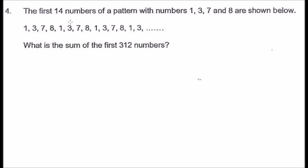Question 4. The first 14 numbers of a pattern with numbers 1, 3, 7, and 8 are shown below: 1378, 1378, 1378, 1378. What is the sum of the first 312 numbers?